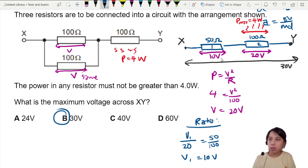This method, you can also work backwards. If you're not sure how to do, you just try. 24 volts, 30 volts, 40 volts, 60 volts, and then you potential divider, potential divider, and see whether the power exceeds 4 or not. That works, that method works too. It's a bit longer, but it works. All right, that's all for this question.